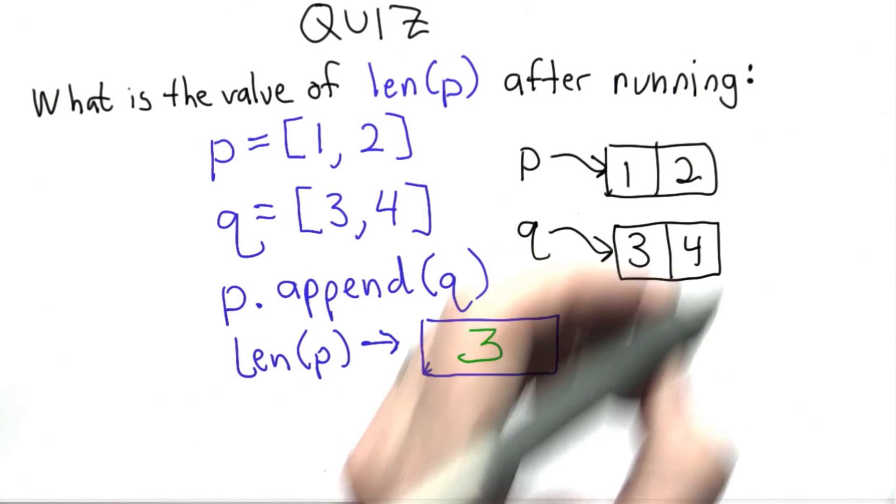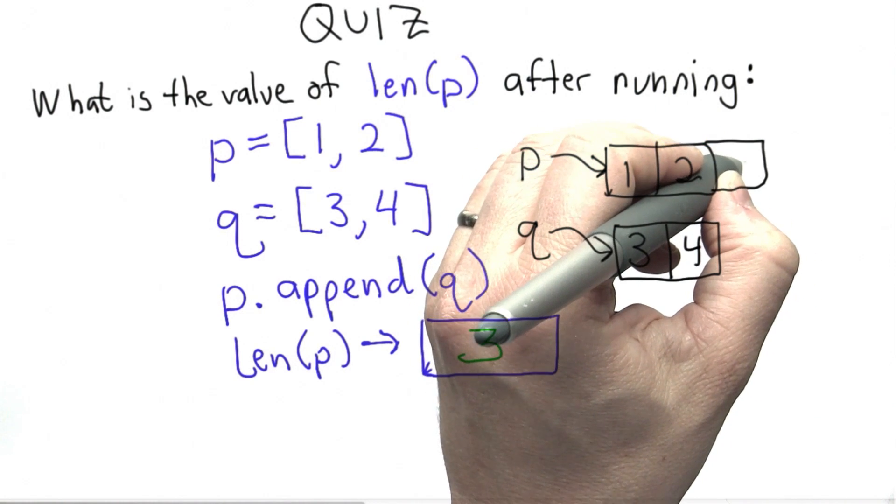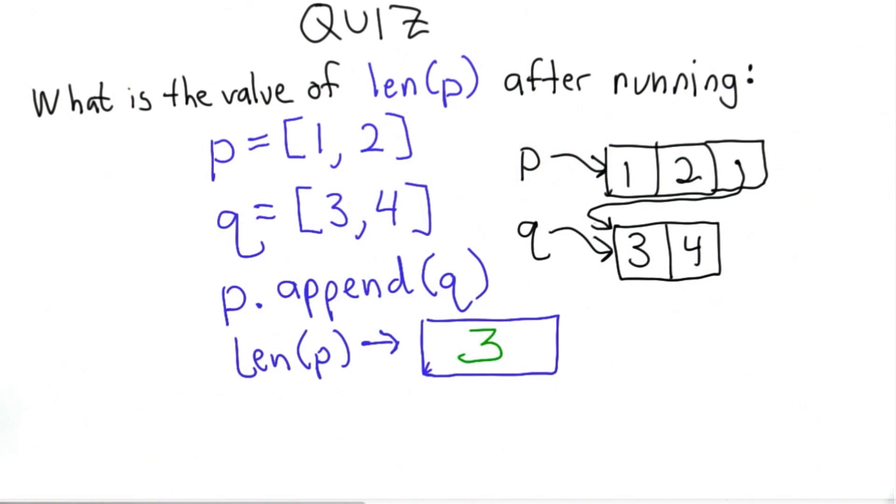So the way this looks is we have a new element in p. The value of that element is actually the list object that q refers to. So that's why the length of p is 3.